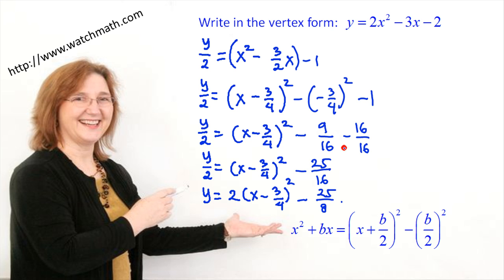So let me review again. Whenever the coefficient of x squared is not equal to 1, divide the equation by that coefficient. Then apply the completing the square identity as in the previous video, and follow all the steps through to the solution.